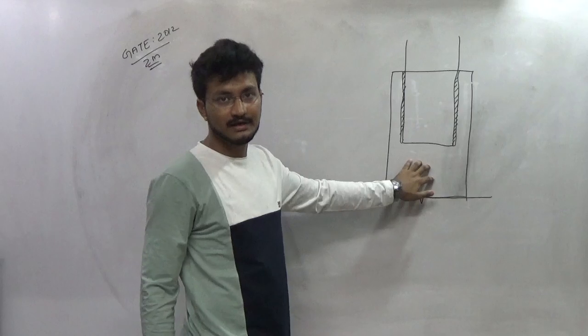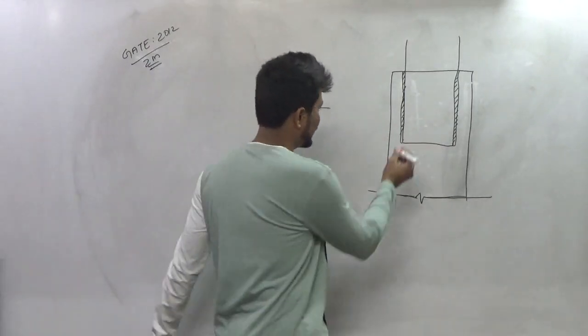This is the first plate and this is another plate. These two are jointed with the help of fillet welding.